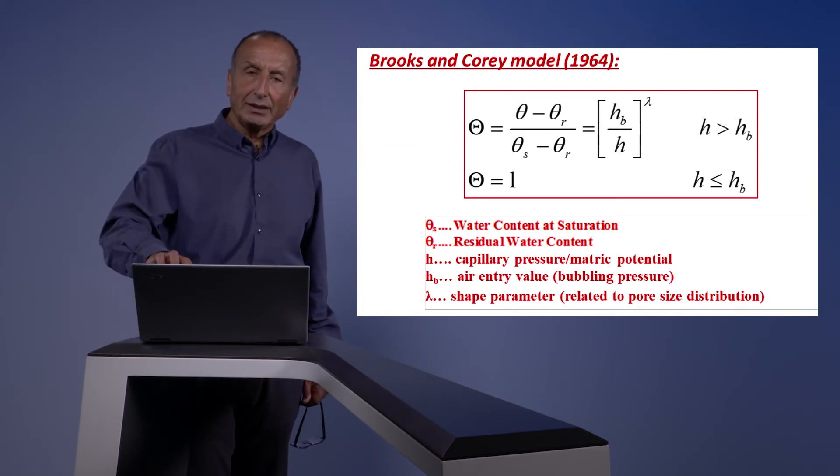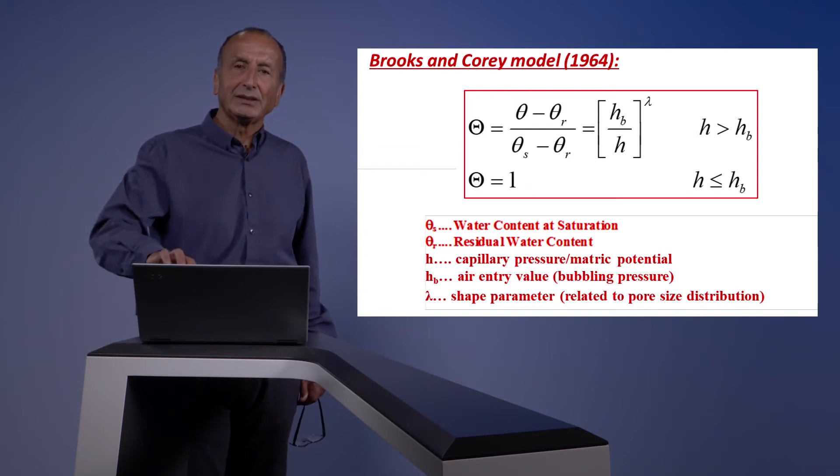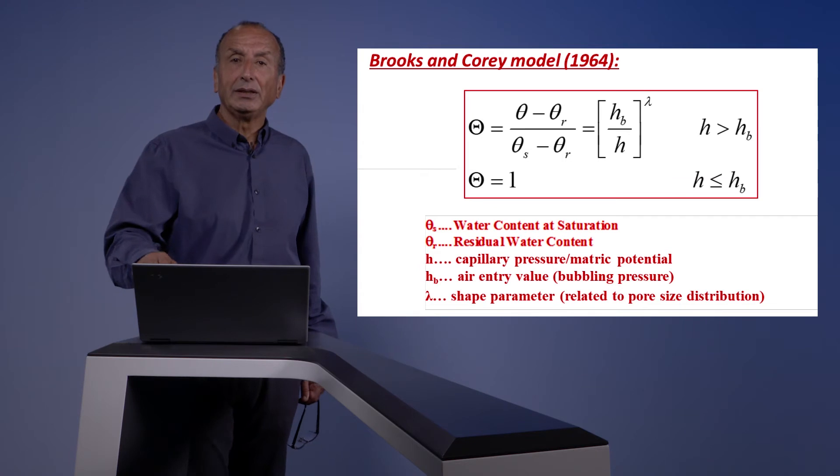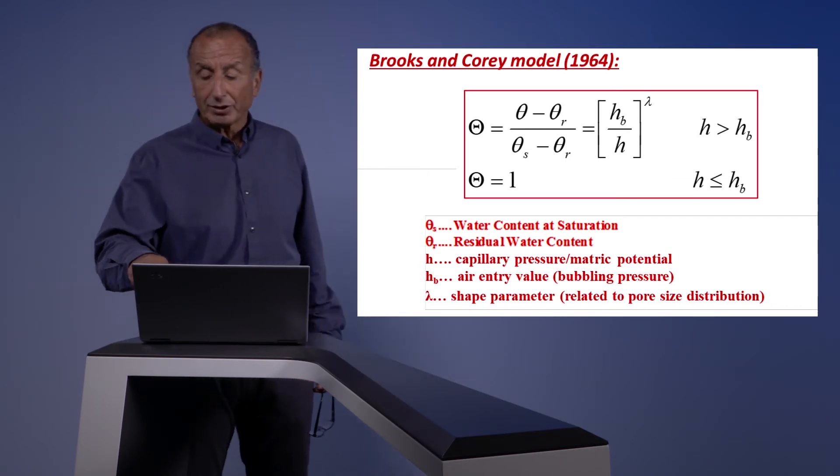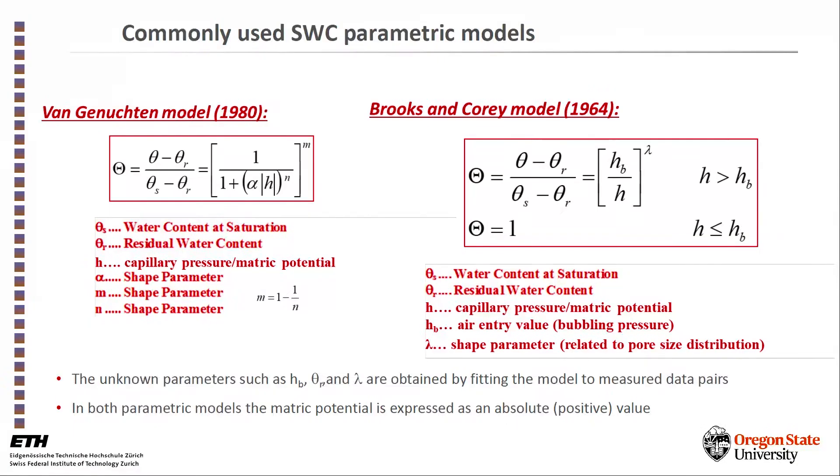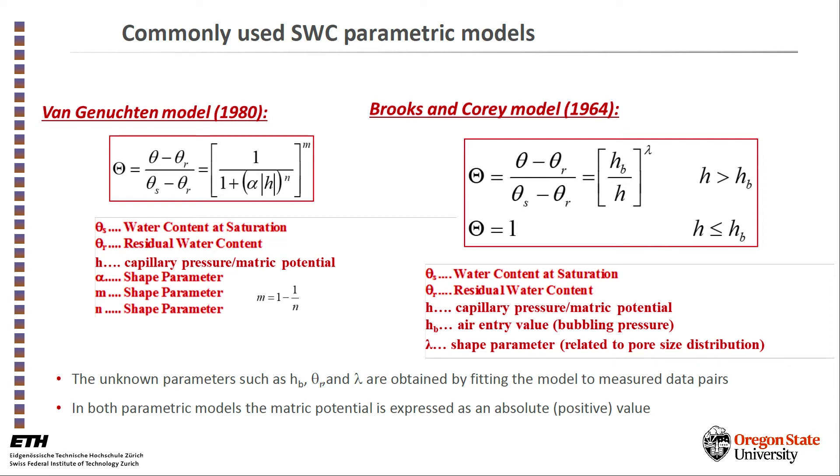However, it has a problem because it is discontinuous up to the value of Hb which we call the bubbling pressure. The soil is assumed to be completely saturated and only when the matric potential or the capillary pressure exceed the bubbling pressure, we'll see this power relationship kick in and give the shape that I'll show you in the next slide.